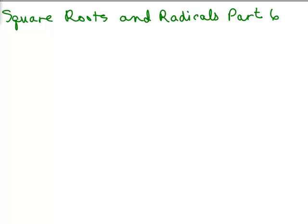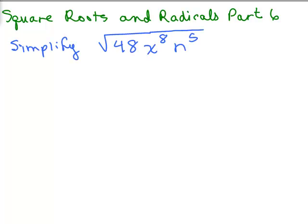This is part 6 of square roots and radicals and we're going to continue simplifying. Let's look at this problem. In part 5 we did a little bit easier problem, so we're stepping it up a little bit. Square root of 48, x to the 8th, and n to the 5th.